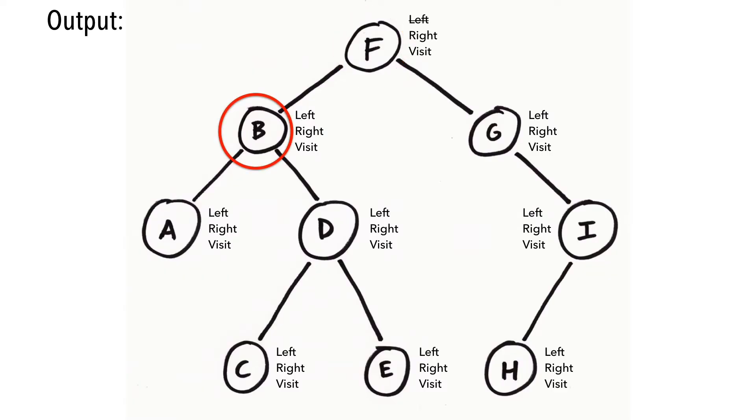Likewise, we traverse B's left subtree and end up at A. We attempt to visit A's left and right children, but since they're null, we'll proceed to print A.